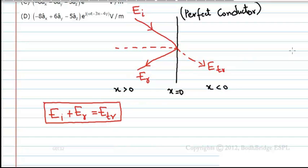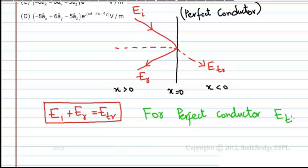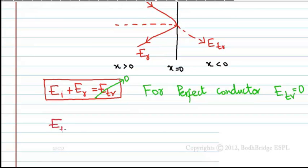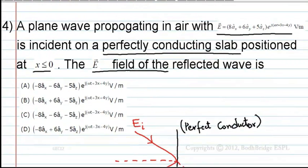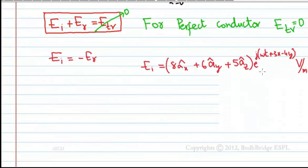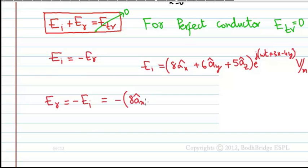For a perfect conductor, E_transmitted equals zero — a perfect conductor does not allow any electric field inside it. Therefore, E_transmitted = 0, which means E_incident = −E_reflected. The incident wave is 8ax + 6ay + 5az, so E_reflected = −(8ax + 6ay + 5az) multiplied by e^(jωt + ...).